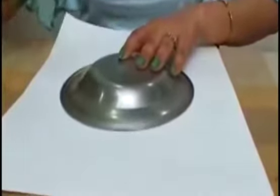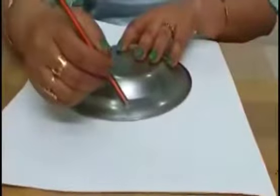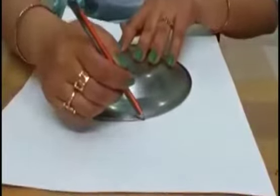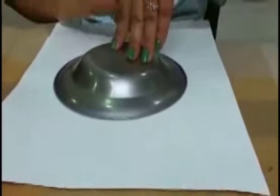You can take one quarter size plate like this and draw a semi circle like this. Then draw a straight line.